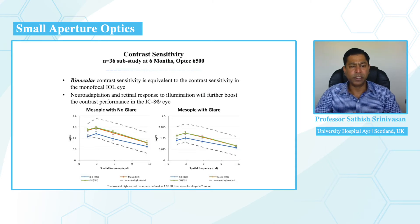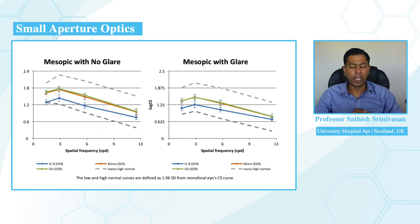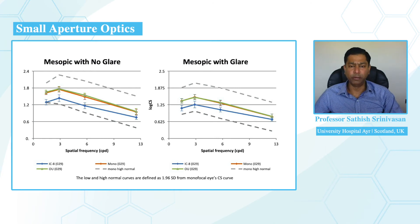This is the contrast sensitivity data at six months, where binocular contrast sensitivity was tested. Binocular contrast sensitivity is equivalent to that of the monofocal eye, and neuroadaptation and retinal response to illumination will further boost contrast performance in the IC8 eye. Although monocularly the IC8 eye has slightly reduced contrast compared to the monofocal eye, binocular contrast sensitivity shows no difference compared to the monofocal IOL-implanted eye.